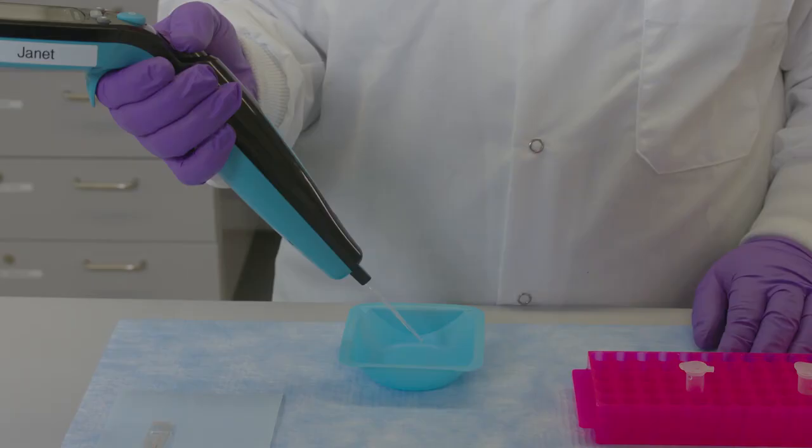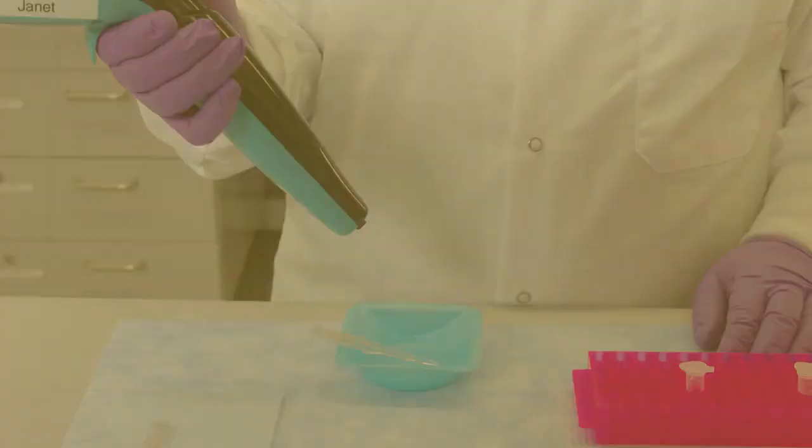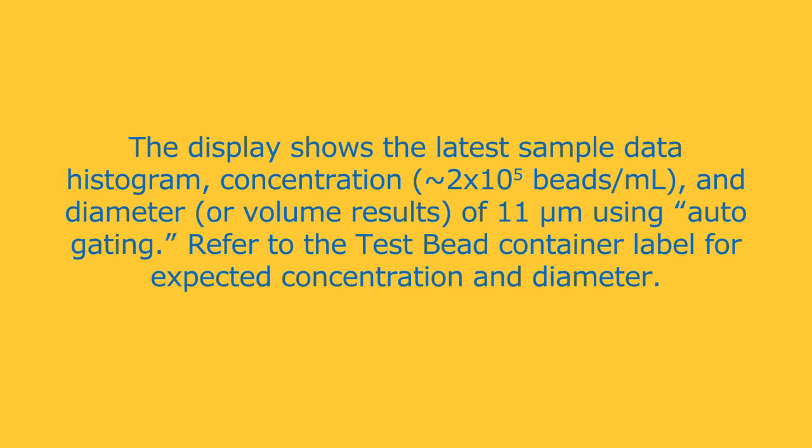Once prompted, eject the sensor tip from the SEPTER 3.0 instrument. The display shows the latest sample data histogram. Refer to the test bead container label for expected concentration and diameter.